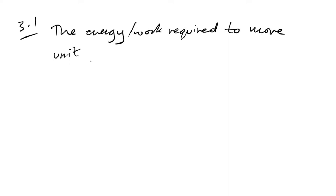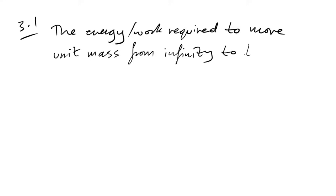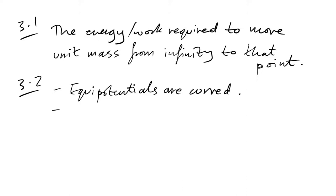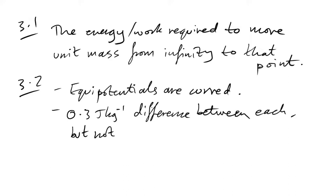Question 3: define gravitational potential. It's the energy or work required to move unit mass from infinity to that point. Lots of people get this the wrong way around — it's from infinity to that point, not the other way. That's why all potentials are negative. How do the potentials show the field is not uniform? The equipotentials are curved. More precisely, there is a 0.3 J/kg difference between each, but not the same distance — so ΔV/ΔR is not constant.